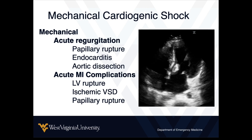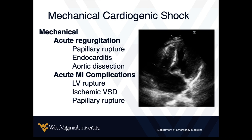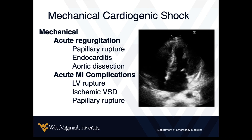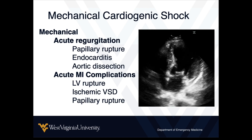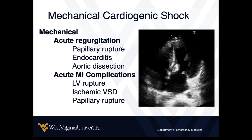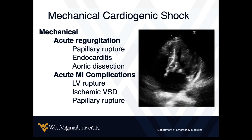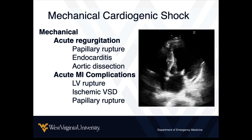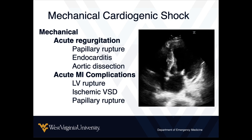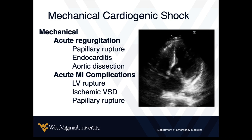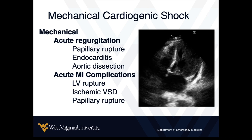In summary: mechanical cardiogenic shock is easy to forget about because it's not as common, but using point-of-care ultrasound is a game changer for identifying these things and treating them appropriately — whereas without it, they might be easy to miss. Mechanical cardiogenic shock usually involves some sort of acute regurgitation from papillary rupture, endocarditis, or aortic dissection, or it could be an acute MI complication: papillary rupture, LV free wall rupture, or an ischemic VSD. Not that common, but important to think about, and point-of-care ultrasound can help you make these diagnoses more quickly.